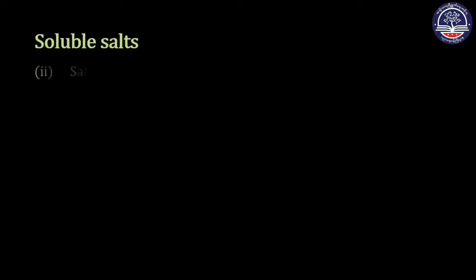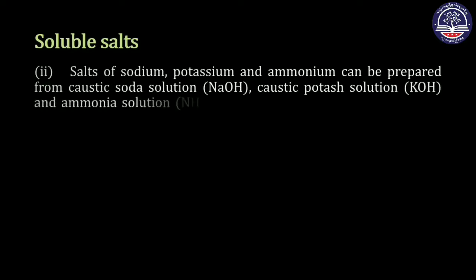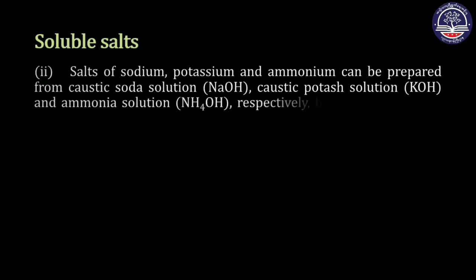What is the name of potassium hydroxide? The soluble bases include: NaOH (caustic soda), KOH (caustic potash), and NH4OH (ammonium hydroxide). These bases are used in neutralization reactions to form salts.